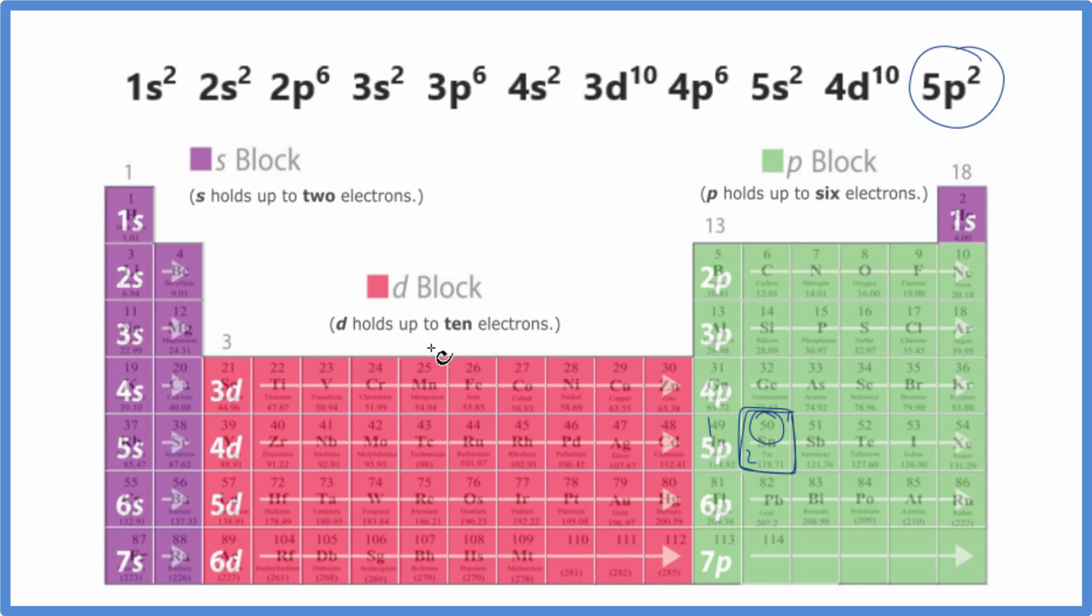Before the 5P, we have 4D. D orbitals can hold up to 10 electrons, so we have D1 through 10, and here's our 4D. Before that, 5S 1, 2. So we have 5S2, and then up here 4P. P's can hold up to 6, 4P6, and so on.